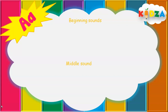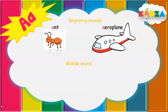Let's go through the pictures of beginning sounds of the letter A. A as in A — A-N-T, Ant. Short sound A. A as in long sound A — A-E-R-O-P-L-A-N-E, Aeroplane. Now let's see the middle sound of the letter A.